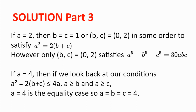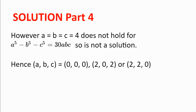Finally, we will look at a equal to 4. Now, if we look back at our conditions — a squared equal to 2 multiplied by b plus c, less than or equal to 4a, and a greater or equal to b, and a greater or equal to c — we see that a equal to 4 is the equality case, and so a equals b equals c equals 4. However, a equal to b equal to c equal to 4 does not hold for a⁵ - b⁵ - c⁵ equal to 30abc, since the left-hand side will be negative, and so cannot be a solution.